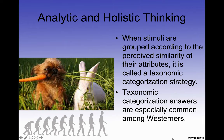When stimuli are grouped according to the perceived similarity of their attributes, it is called a taxonomic categorization strategy. Taxonomic categorization answers are especially common among Westerners. We try to put things together — two mammals. We might put the carrot with the rabbit because the rabbit eats carrots, or we may put the dog and the rabbit together because they are both mammals. That's a taxonomic categorization. In fact, that's part of the SAT test and most intelligence or achievement tests.